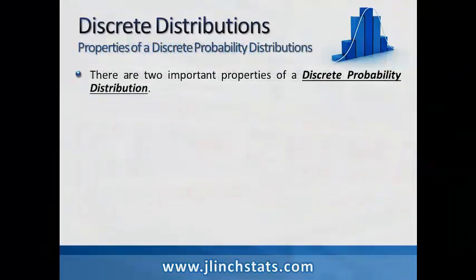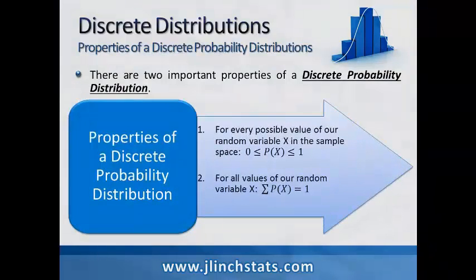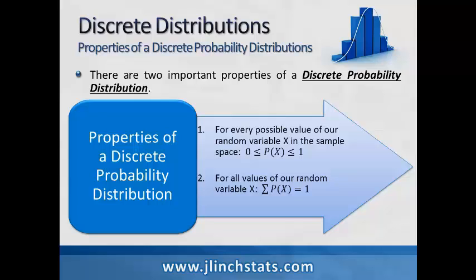There are two important properties of a discrete probability distribution. The first important property is that for every possible value of a random variable x in the sample space, its associated probability must be between 0 and 1 inclusively. That is, 0 is less than or equal to the probability of x, which is less than or equal to 1.